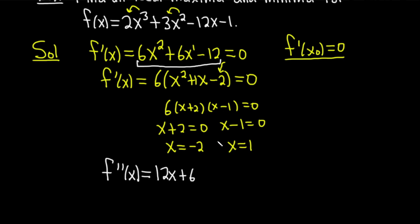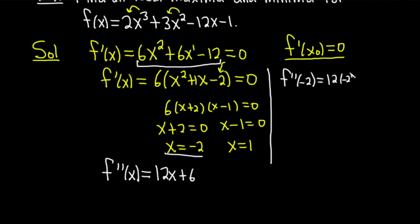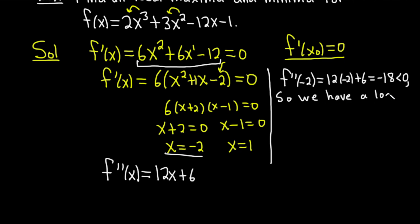Let's check each critical point. First, f double prime of negative 2: plugging negative 2 into 12x plus 6 gives 12 times negative 2 plus 6, which is negative 24 plus 6, equal to negative 18. That's less than 0, so we have a relative maximum at x equals negative 2.